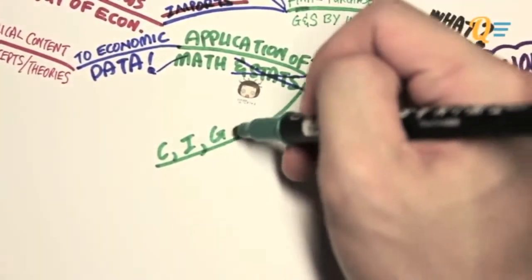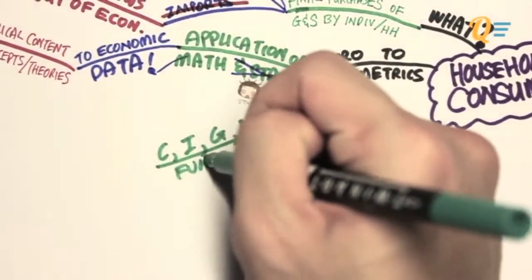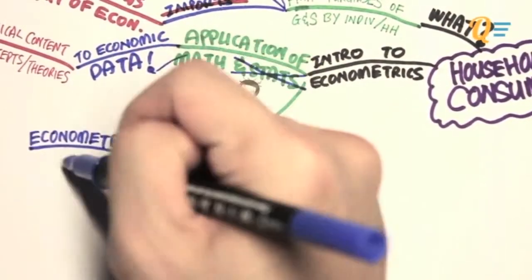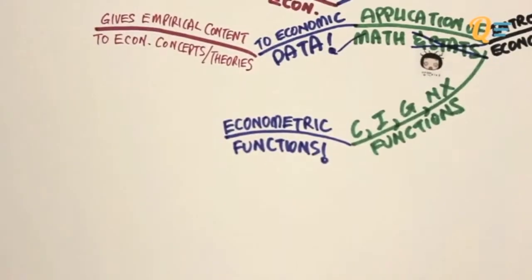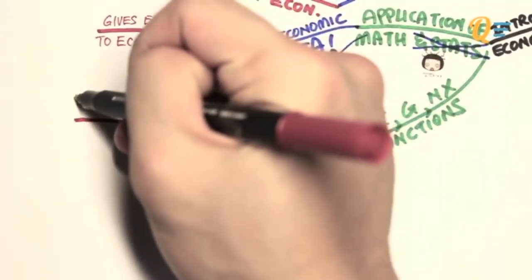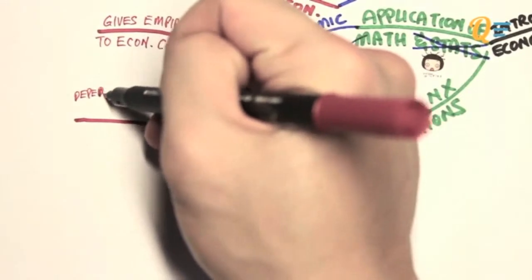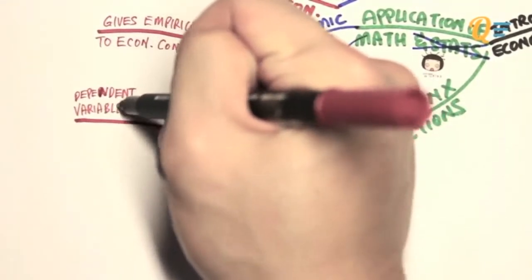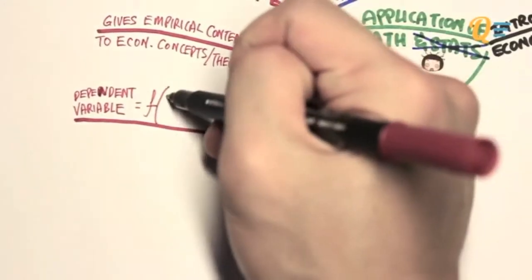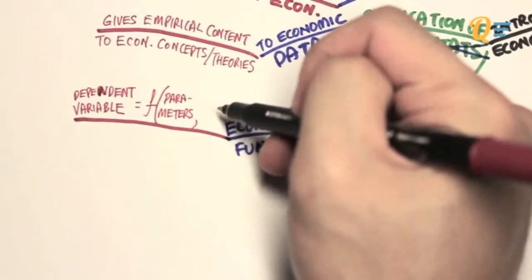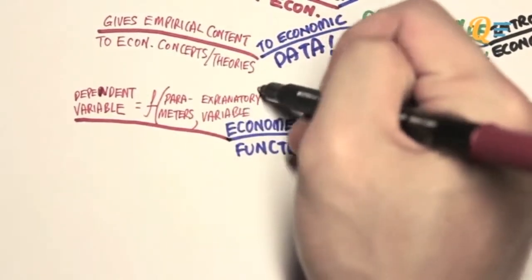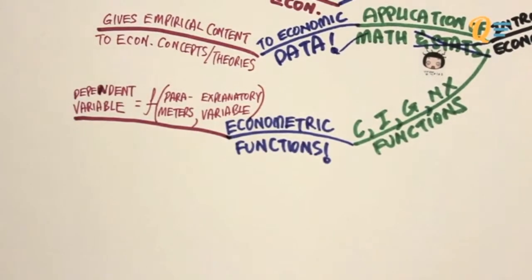So this brings me to how economies generate functions for consumption, investment, government spending and net exports. They use what we call an econometric function. Econometric functions are all about relationships. And how this works is you take whatever variable you want to estimate, so in this case we're going to talk about consumption, and we're going to call that the dependent variable. And it's called the dependent variable because the value of this variable depends on things like your parameters as well as explanatory variables.